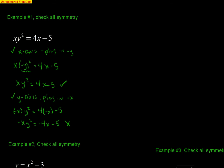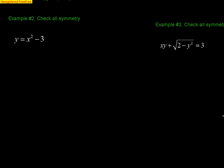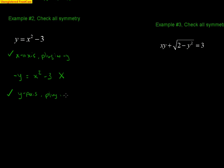Let's check example number 2: check for all symmetries. Check the x-axis — that means plug in negative y. We get −y = x² − 3. There's nothing else to simplify, and that's not the same as the original, so no good. Now check the y-axis symmetry, which means plug in negative x. We get y = (−x)² − 3, which simplifies to y = x² − 3. That is the exact same as the original, so we are symmetric to the y-axis.